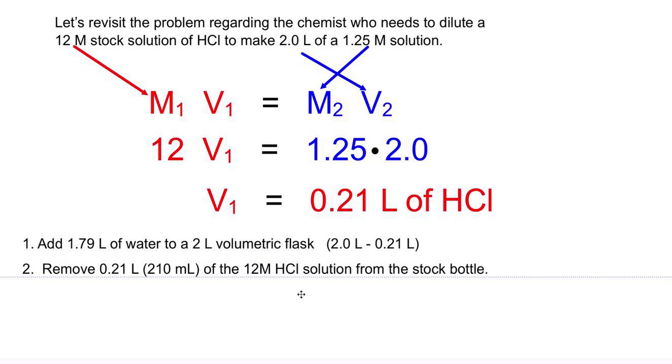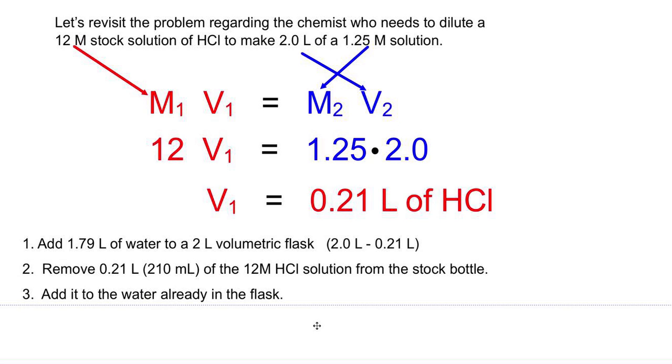Then you're going to add your 0.21 liters of hydrochloric acid. So take that out of the stock bottle and then slowly pour it into the water in the flask and then swirl it to dissolve. And then just make sure that your final volume is exactly 2 liters. If it's not, you may want to top it off and add a little bit more water.